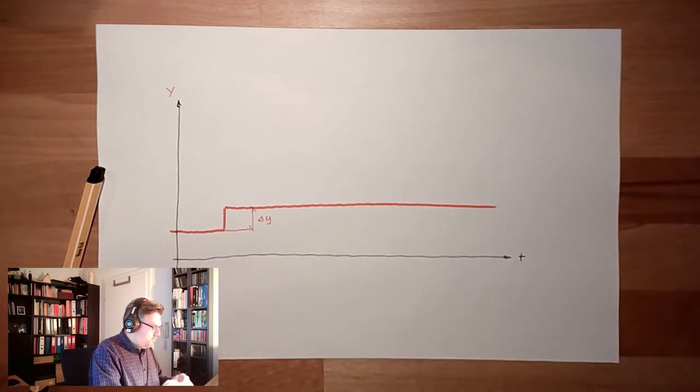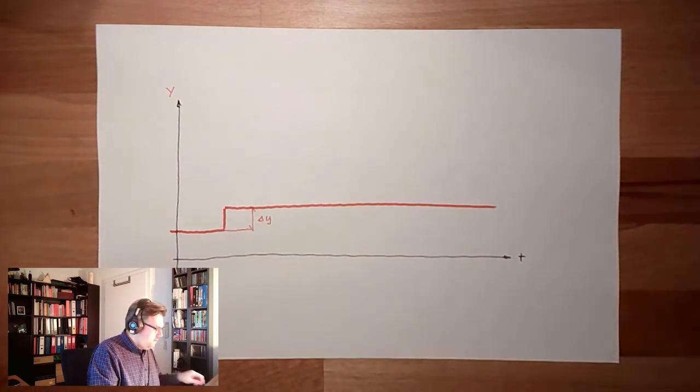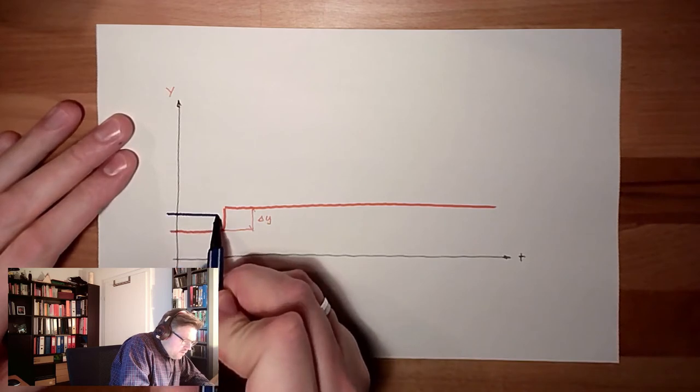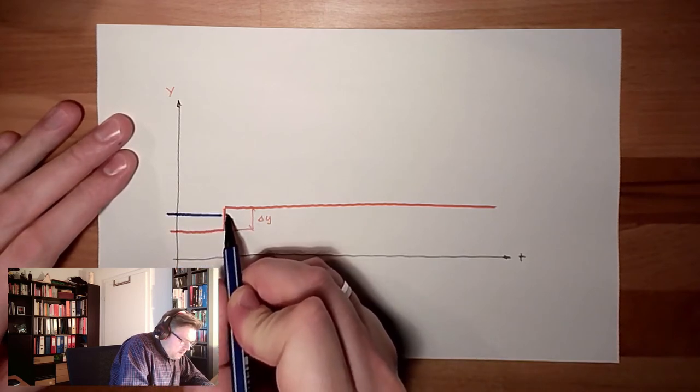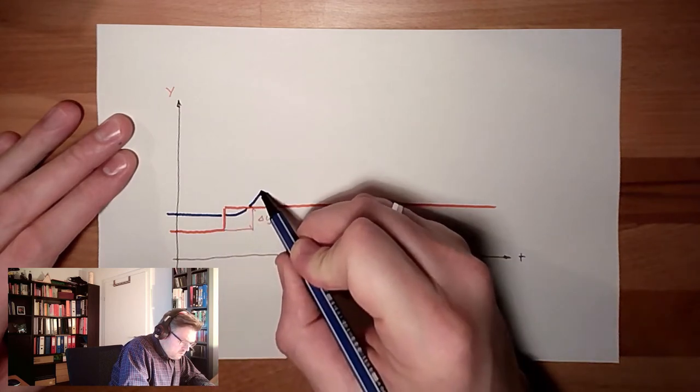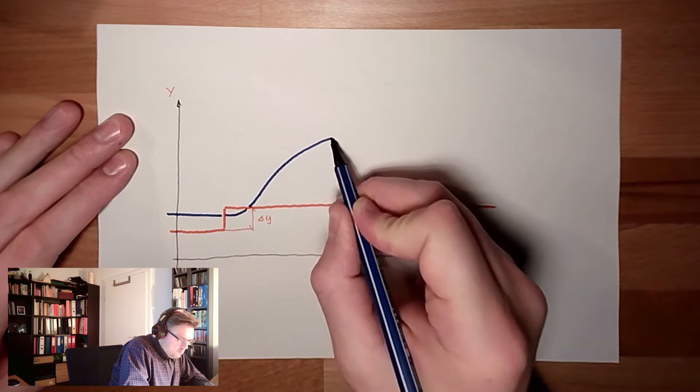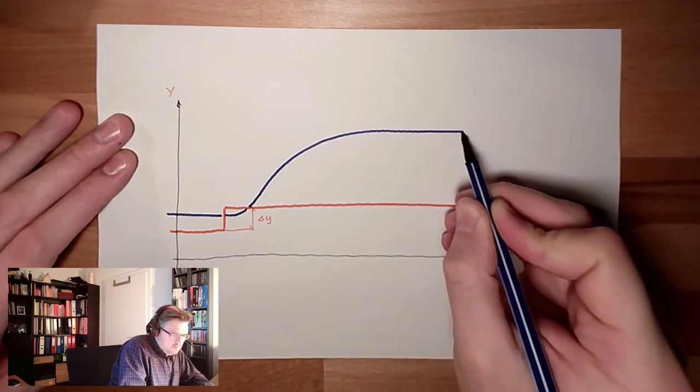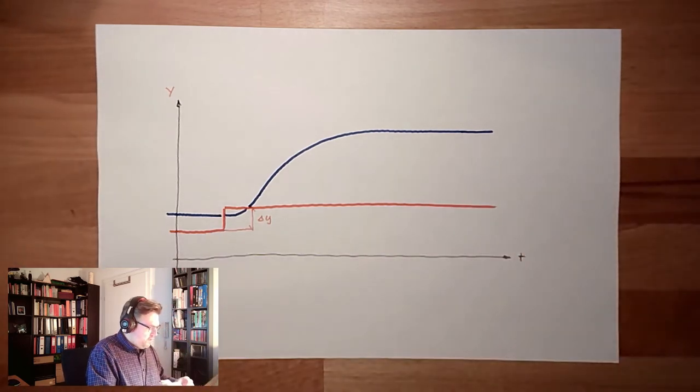And we observe the reaction of the system. The regulated variable will be somewhere, then here it will start to change, then it will get stable again. That's the reaction of the regulated variable x.